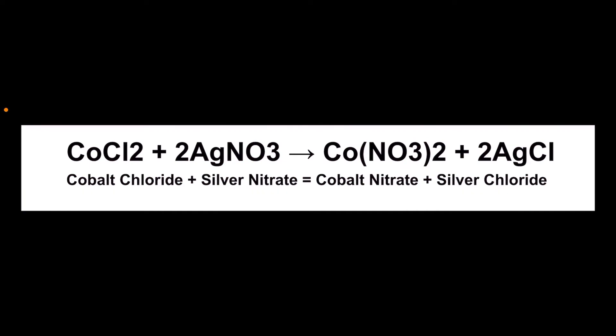What's happening in this amazing double displacement precipitation reaction is you begin with the reactants cobalt chloride CoCl₂ and silver nitrate AgNO₃. When they combine, they create the products cobalt nitrate and the insoluble precipitant silver chloride, AgCl.